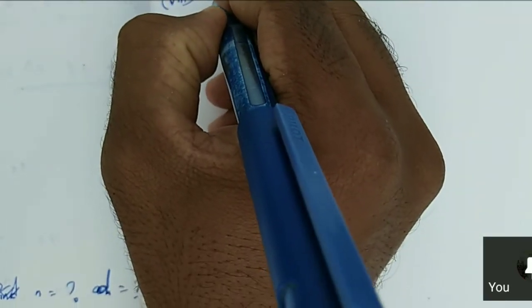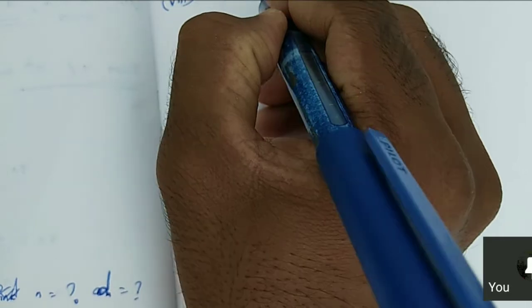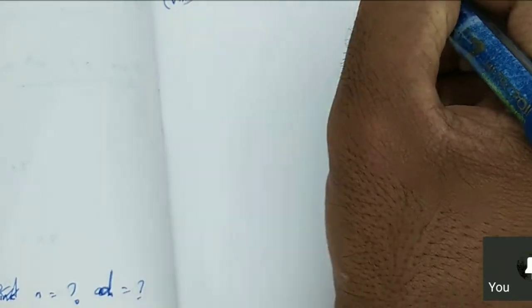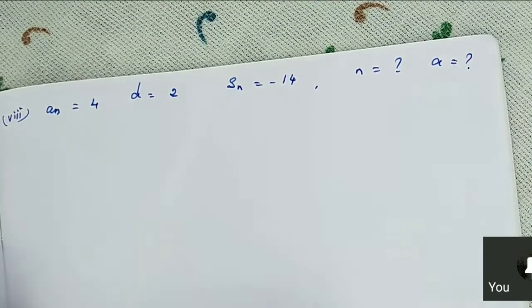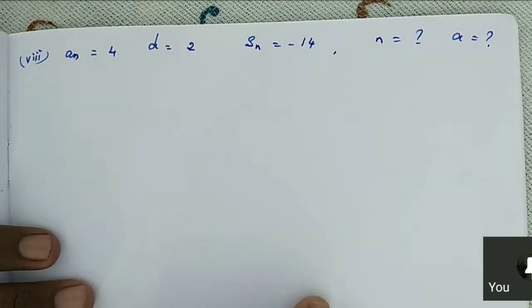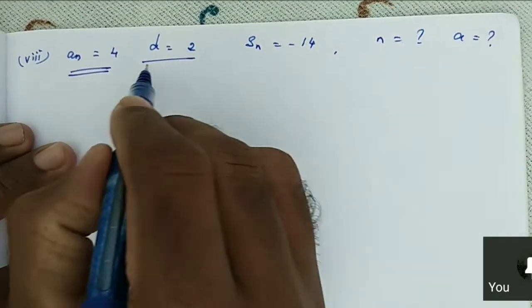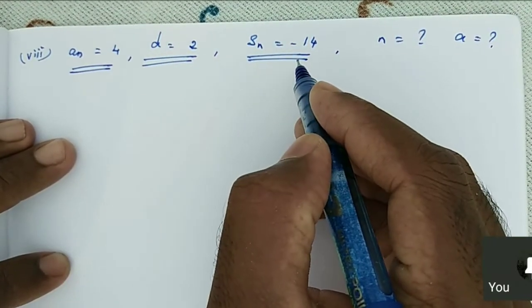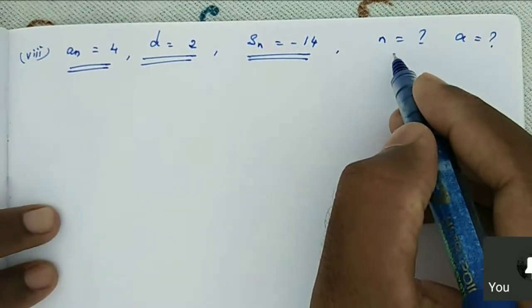A_n is equal to 4, D is equal to 2, S_n is equal to minus 14. Then we need to find the N value and A value. A value is 4, D value is 2, S_n value is minus 14. We need to find N and A.